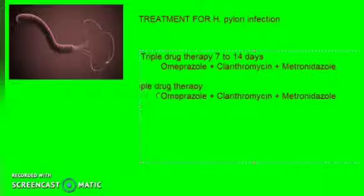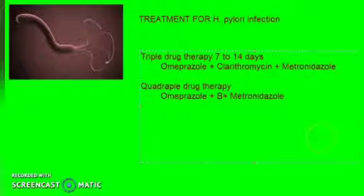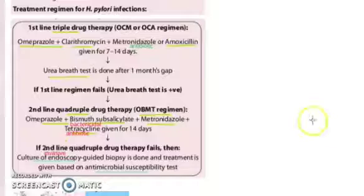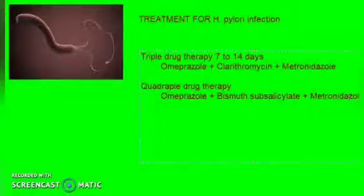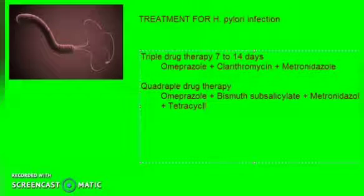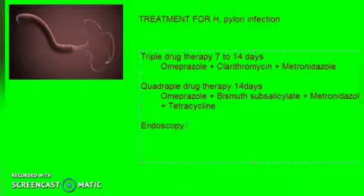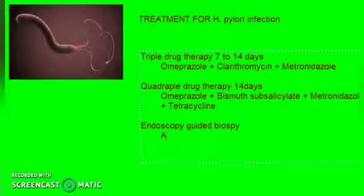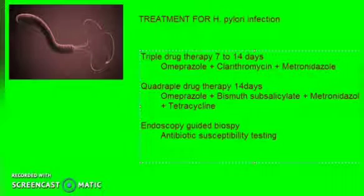If the urea breath test fails, then you will give the quadruple drug therapy — omeprazole plus bismuth subsalicylate, which is a bactericidal agent, and you will also add the fourth drug, tetracycline. This again you will give for 14 days. If there is failure again, you will do an endoscopy-guided biopsy, get the tissue, and then do an antibiotic susceptibility test to know which drug might work.